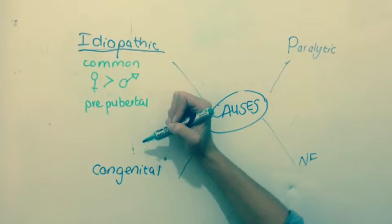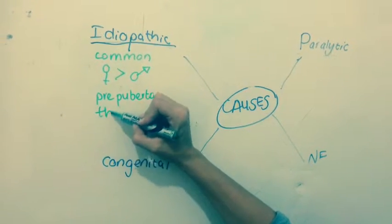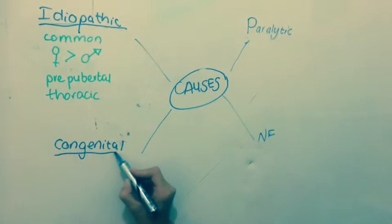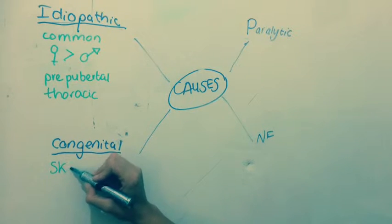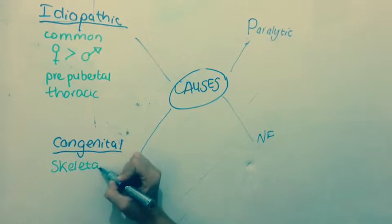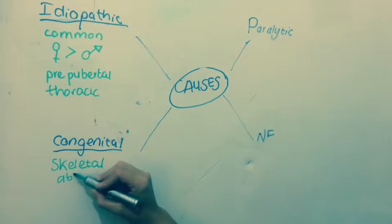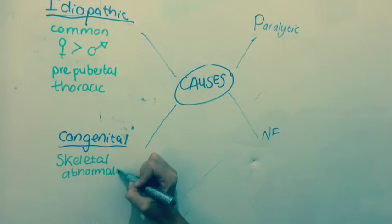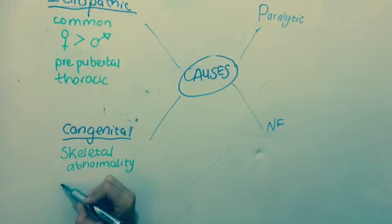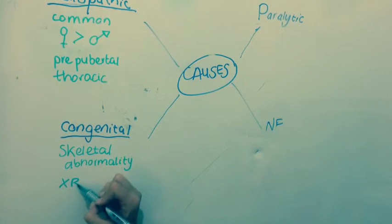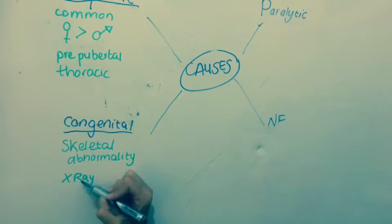Congenital scoliosis: the deformity is due to an underlying skeletal abnormality, for example a hemivertebra, fused vertebra, or absent or fused ribs. It is diagnosed on X-ray. Scoliosis may not be present at the time of birth.